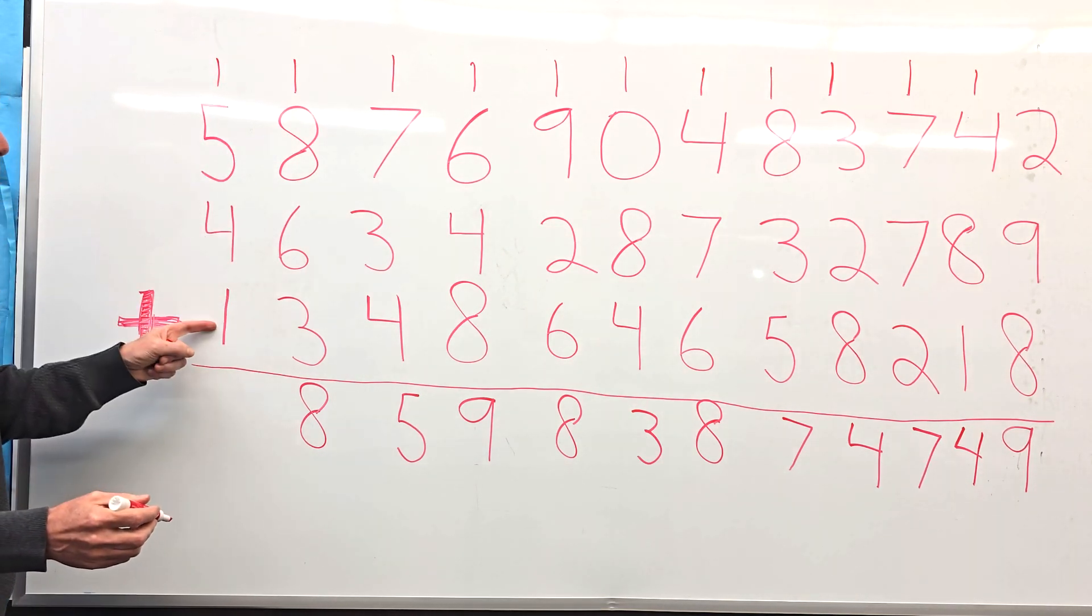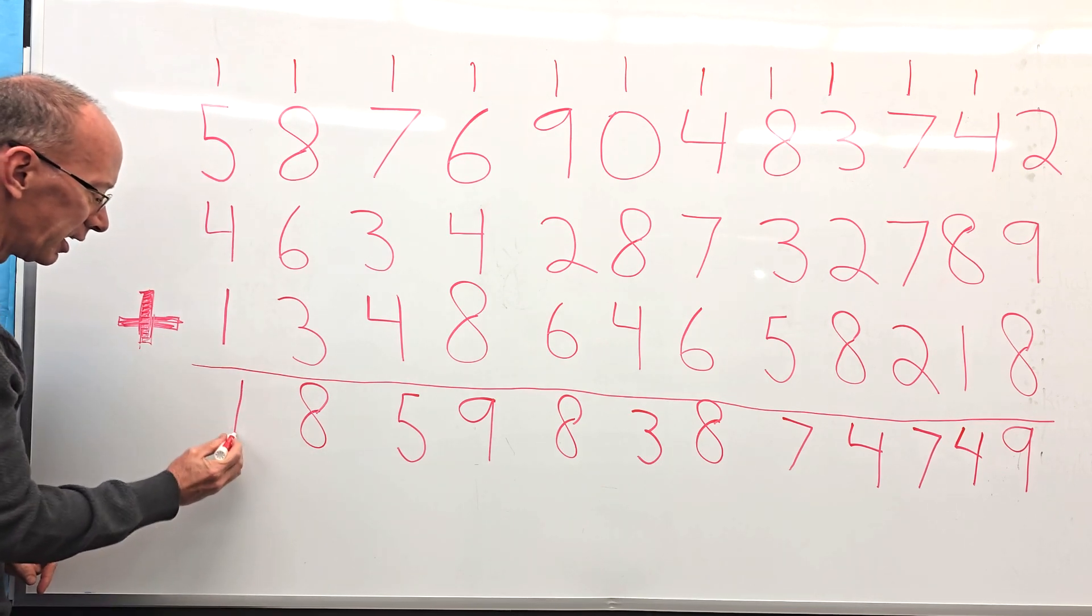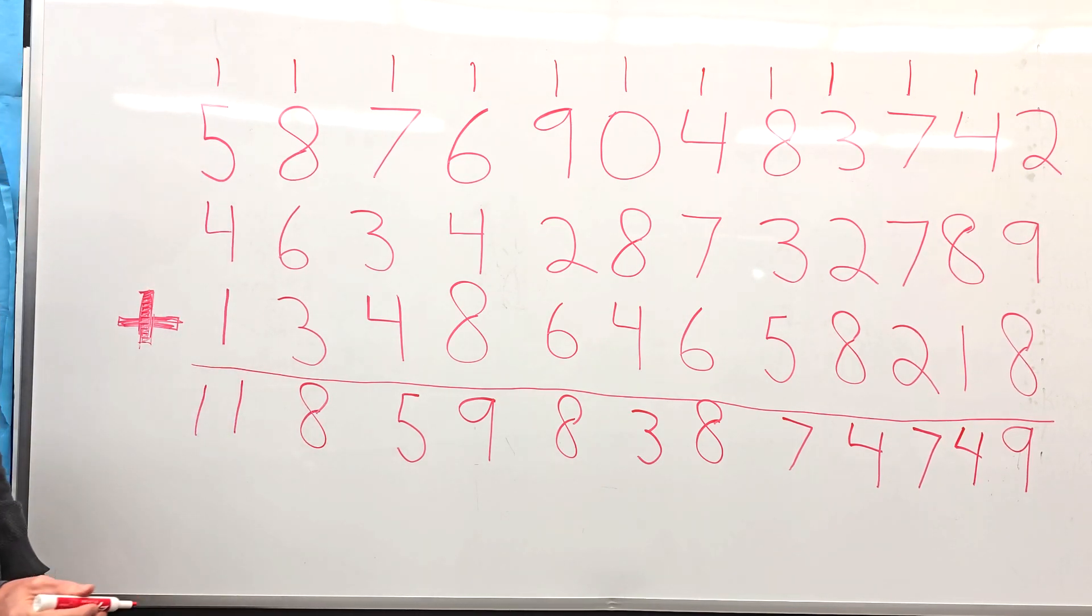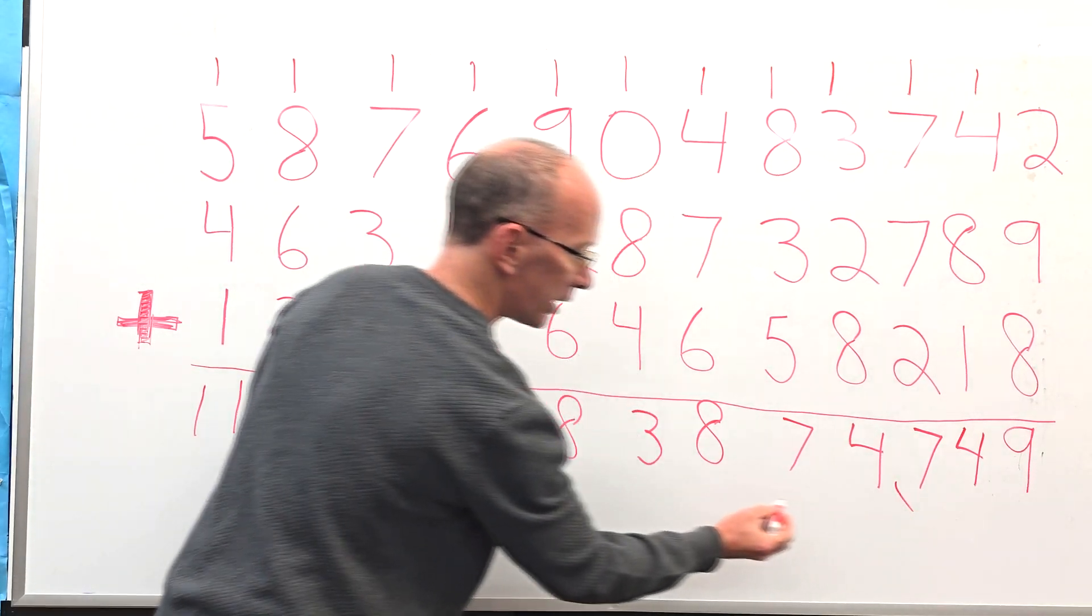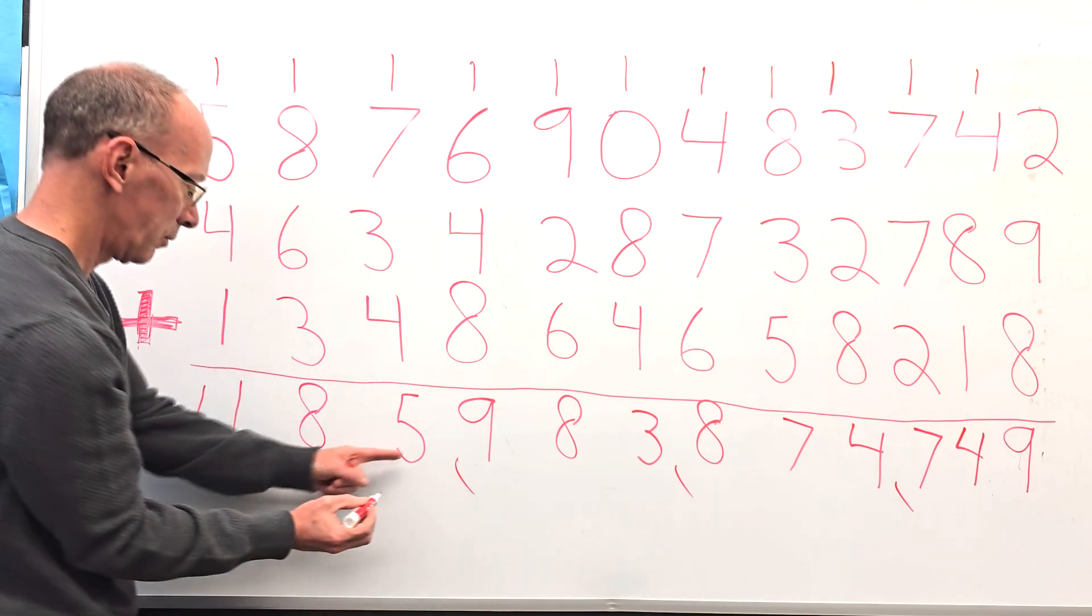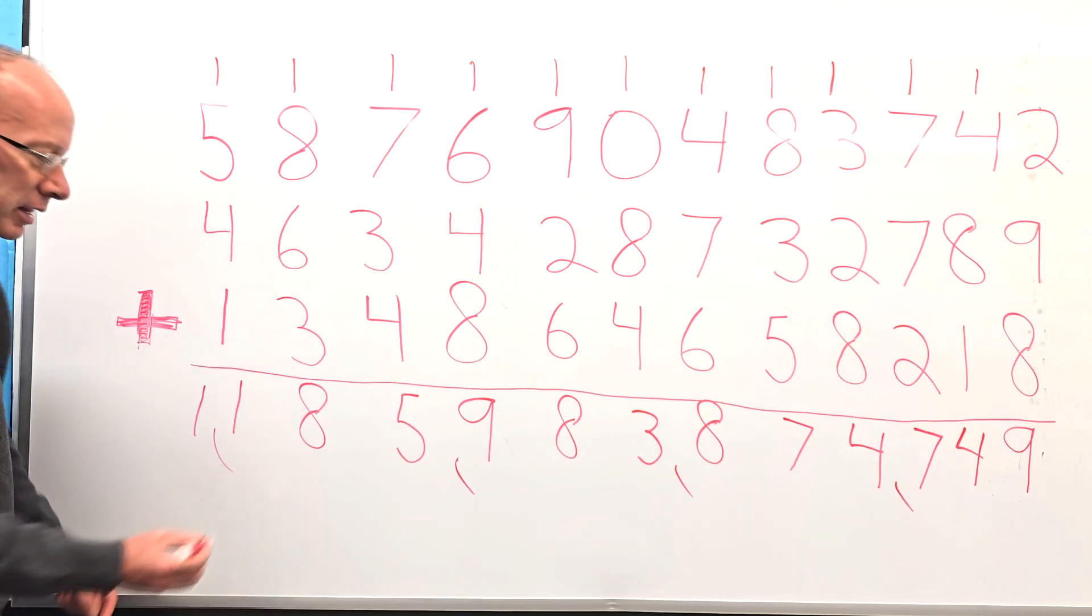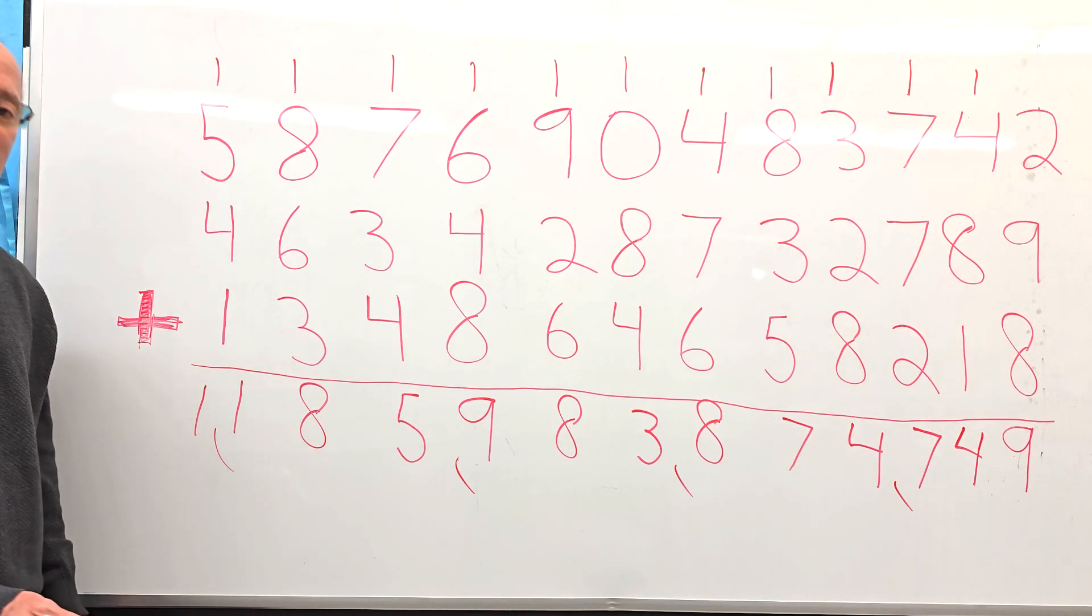Carry the 1 up here. 5 and 4 is 9, plus the 1 is 10, plus the 1 right there is 11. Wow. I'm going to put some commas in here. Right there, another comma here, and another comma there. 1, 2, 3. Right there. How'd you do? Oh my goody gumdrop.